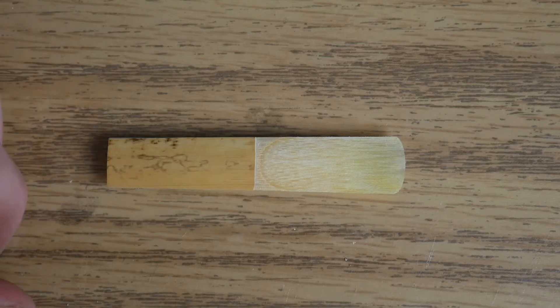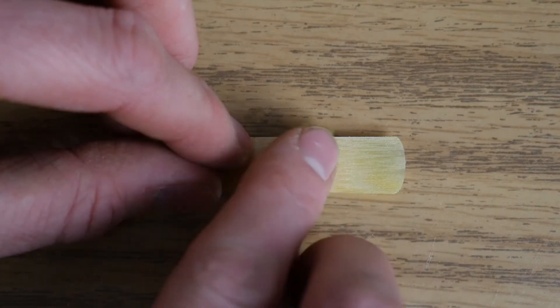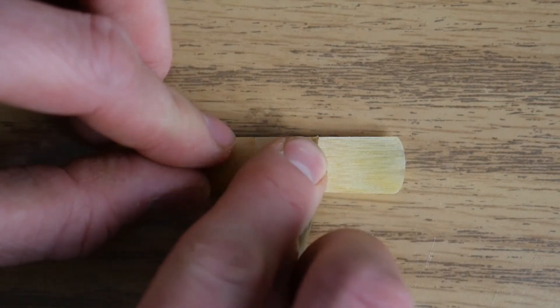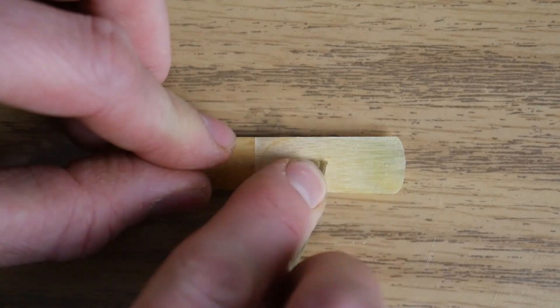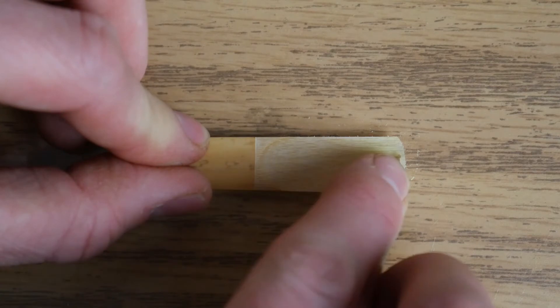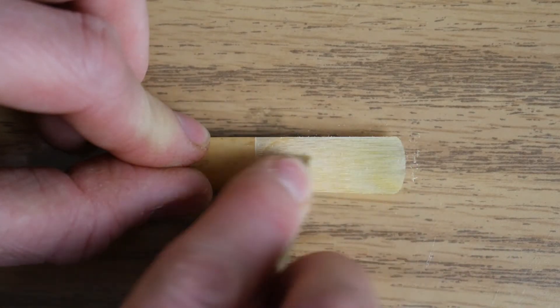On the third day of the break-in process, soak the reed for one minute and then seal the vamp. You can use either reed rush or sandpaper, but the basic concept is to gently sand the entire surface of the vamp of the reed to close up any of those pores that are open. This will prevent saliva and impurities from getting into the cane and create a much longer-lasting reed.